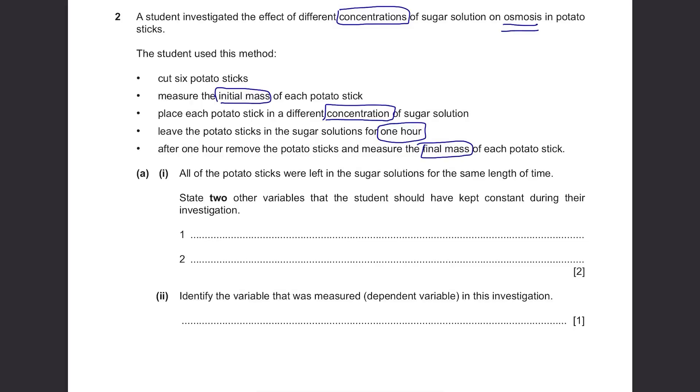Part A: All of the potato sticks were left in the sugar solutions for the same length of time. State two other variables that the student should have kept constant during their investigation. The mass was measured so it's fine. Concentrations were varied. They were left for same period of time. Well, when they cut potato sticks, they didn't specify the length or its size. The rate of osmosis is dependent on the surface area so the size of potato sticks should be kept constant. Also the type of potato should be the same since potatoes have quite a number of variations. Then they should keep the volume of sugar solution constant to carry out a fair test.